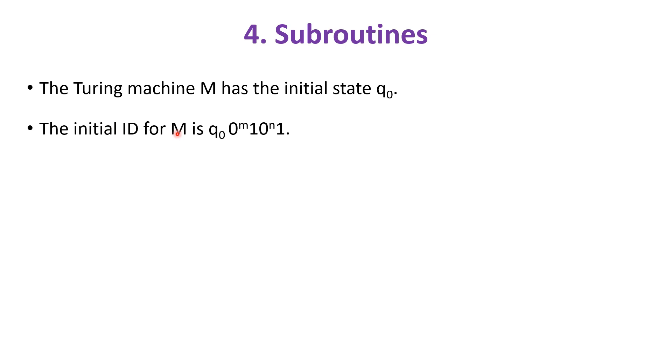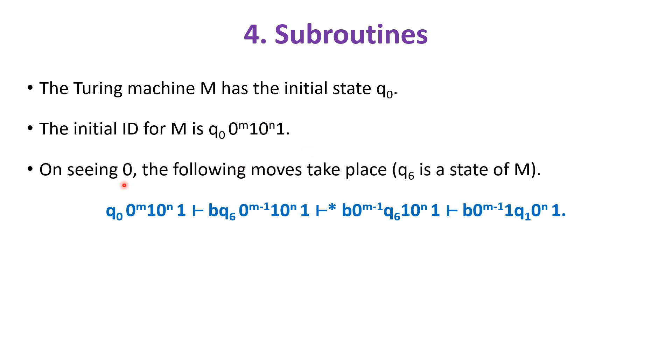The Turing machine M has the initial state q0. The initial ID for M is q0 0^m 1 0^n 1. On seeing 0, q0 replaces 0 by B, moves towards the right, and changes the state from q0 to q6, where q6 is a state in M.